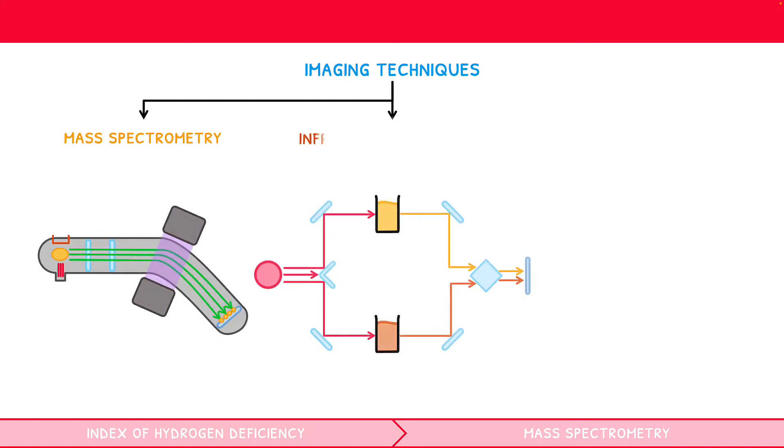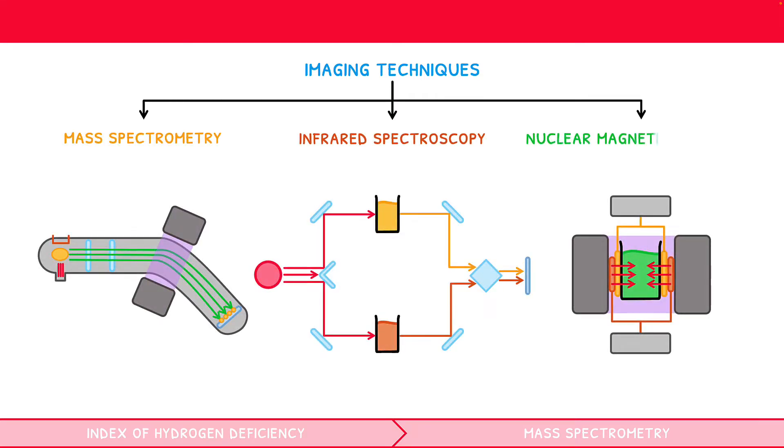This topic of IB Chemistry covers three main imaging techniques used to determine the structure of organic compounds: Mass Spectrometry, Infrared Spectroscopy and Nuclear Magnetic Resonance Spectroscopy. Before covering how each can reveal the structure of an organic compound, we must first outline a rule to predict the bonding within such species.